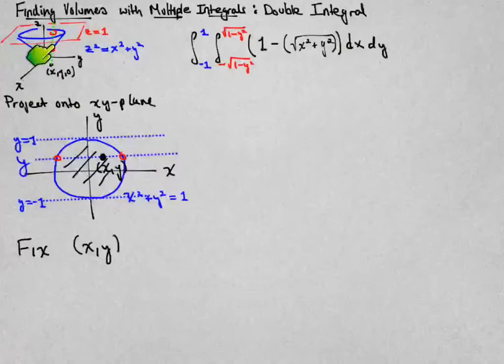And then taking away from that the bottom surface, the cone, so I'm going to solve that equation for z, and z is the square root of x squared plus y squared, the positive square root, and so I just take their difference and integrate that expression.